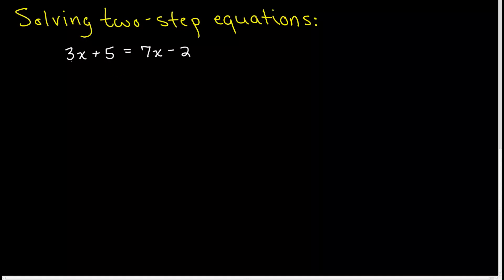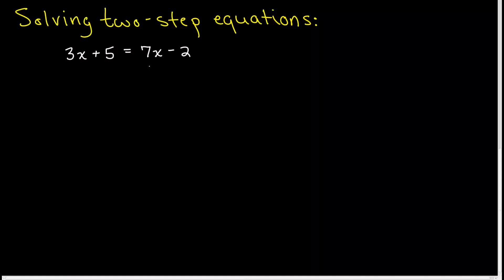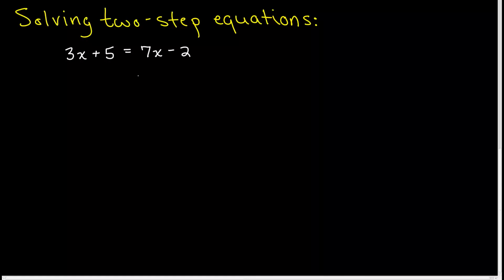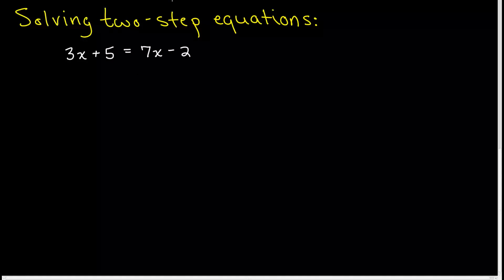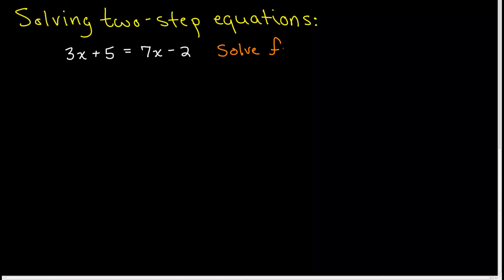It's called a two-step equation because it has an x term on this side and an x term on this side. Another way to think of this is it's going to require more than one operation to solve for the variable x. That's what our end goal is: to solve for x.